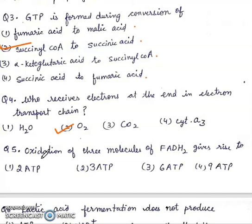Fifth question: Oxidation of 3 molecules of FADH2 gives rise to? One molecule of FADH2 gives 2 ATP. Three will give 2 into 3, 6 ATP.